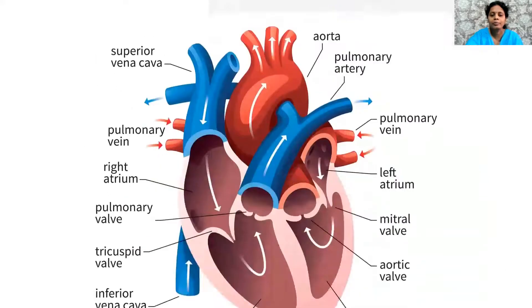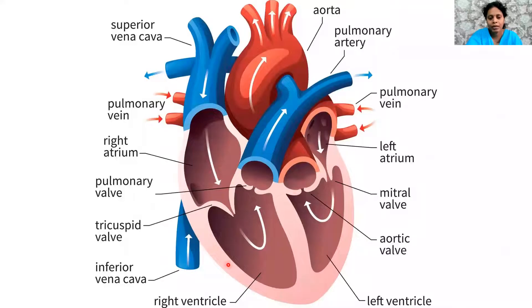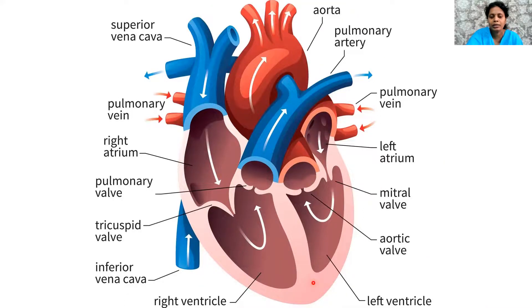Coming to the heart: the heart is usually the fist size of one's self and is covered by a double-layered membrane. The space between the two membranes is filled with the pericardial fluid, which protects the heart from shocks and jolts. This heart is divided into right and left portions with the help of a vertical septum.